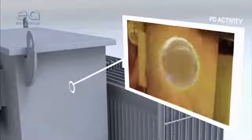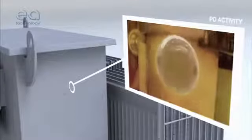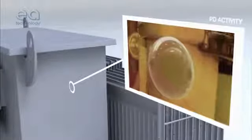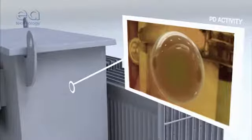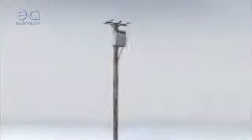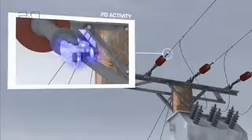Partial discharge can occur in voids within solid insulation, across the surface of insulating material, within gas bubbles in liquid insulation, or around electrodes in gas, or it can produce corona.